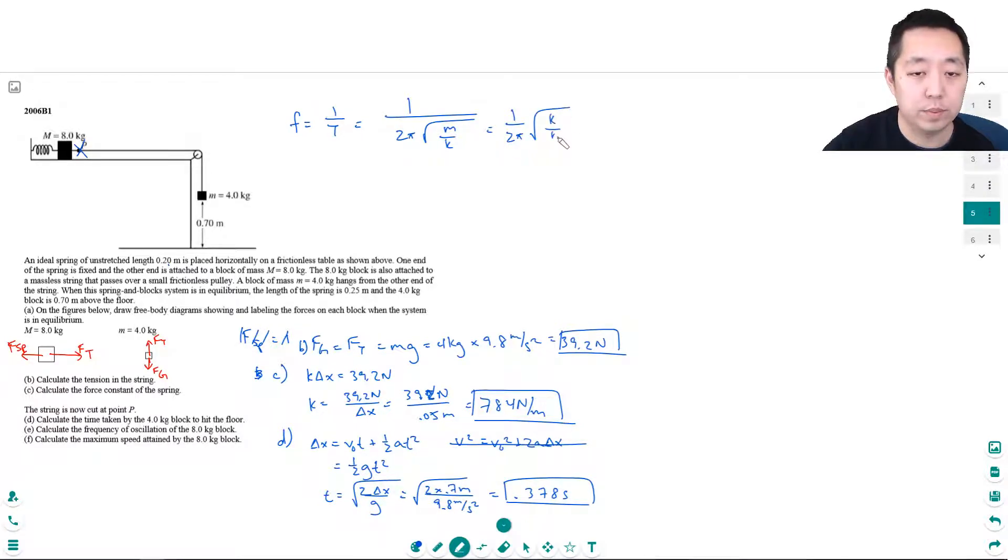So 1 over 2 pi square root, k is 784 newtons per meter and then mass is 8 kilograms.